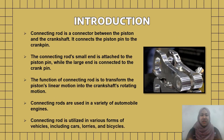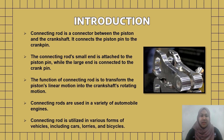For introduction, a Connecting Rod is a connector between the piston and the crankshaft. It connects the piston pin to the crank pin. The connecting rod's small end is attached to the piston pin, while the large end is connected to the crank pin. The function of the Connecting Rod is to transform the piston's linear motion into the crankshaft's rotating motion.